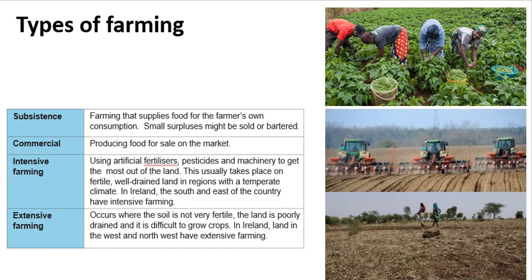The next types of farming may be less familiar. Subsistence farming is when a farmer grows food for their own consumption and their family's. It occurs in poor areas — for example, in poor parts of Africa, a farmer might have just one acre and grow crops only to feed themselves and their family, selling only small surpluses. Subsistence farming also existed in Ireland during the famine in the 1840s and 1850s, when farmers grew potatoes just for their own consumption.